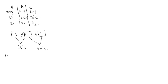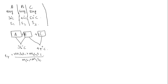We know the formula for resultant temperature. It is M1·S1·T1 plus M2·S2·T2, divided by M1·S1 plus M2·S2. Now we will apply it first for A and B.